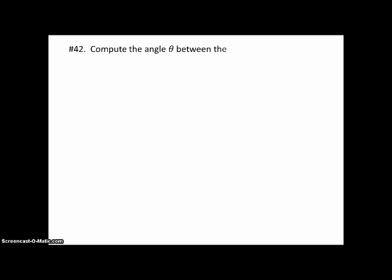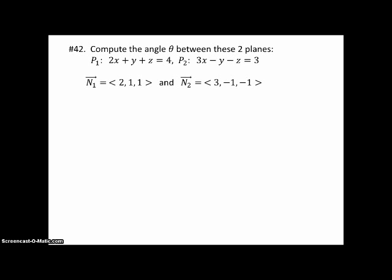Number 42. Compute the angle theta between these two planes, and they're both given in standard form. Now, think about it. The angle between the planes is going to be exactly the same as the angle between the norms, because the norms are perpendicular to the plane. And so they're just going to differ by 90 degrees, and the angle between them will be the same. So, N1 consists of the coefficients in the equation for the first plane, and N2 consists of the coefficients of X, Y, and Z in the second plane.